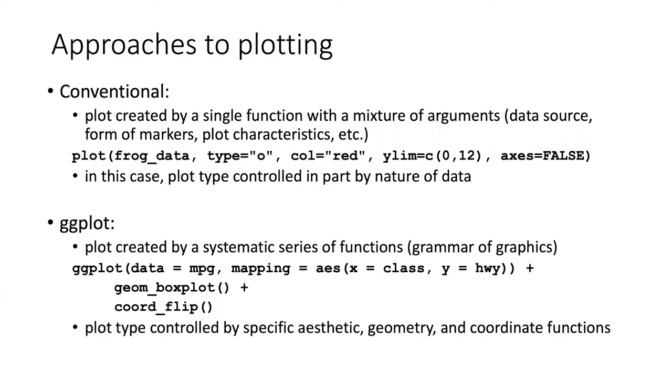If we were to compare the ggplot approach with the conventional plotting approach, we would see that in the conventional approach, you create a plot by having some sort of a function, and that function has a long laundry list of arguments. Those arguments are used to control the plot characteristics, such as what kind of plot markers to use, the color, where the data will come from, whether there should be axes, and so on.